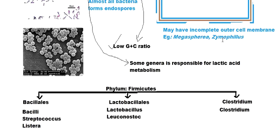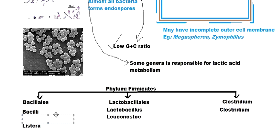There is a small correction — in the Bacillales class, I previously mentioned streptococcus but it should be Staphylococcus. Now let us discuss these genera. Starting with Bacillus — by the word 'bacilli' you may remember rod-shaped bacteria, and you are right. This genus contains all the rod-shaped bacteria.